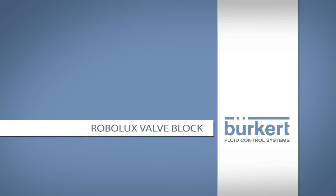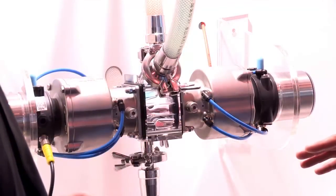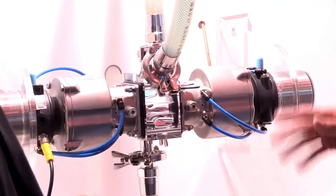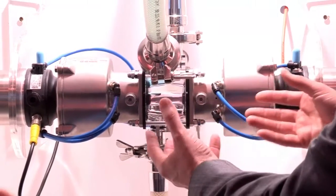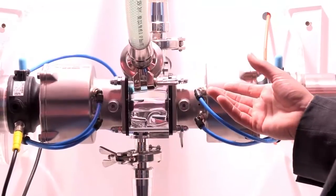The Robolux block solution is a solution where we have two seats in one. It's a diaphragm valve seat and we minimize the design of a complete installation. These are requirements which have been asked for in clean rooms.